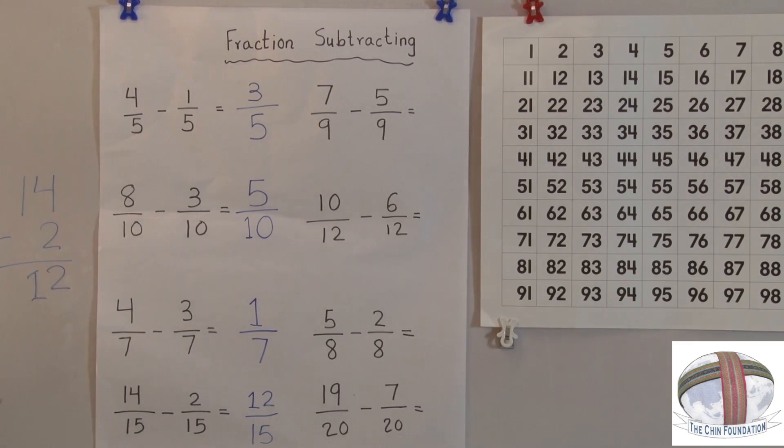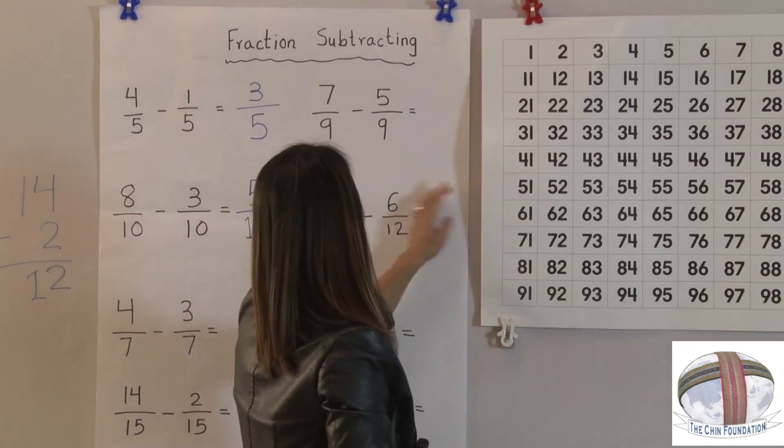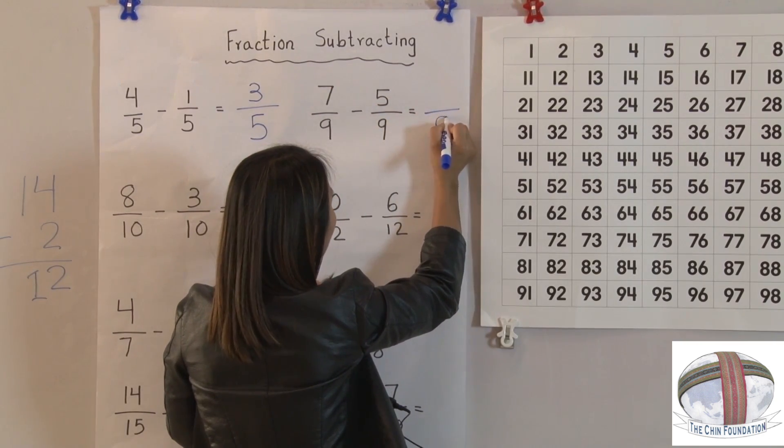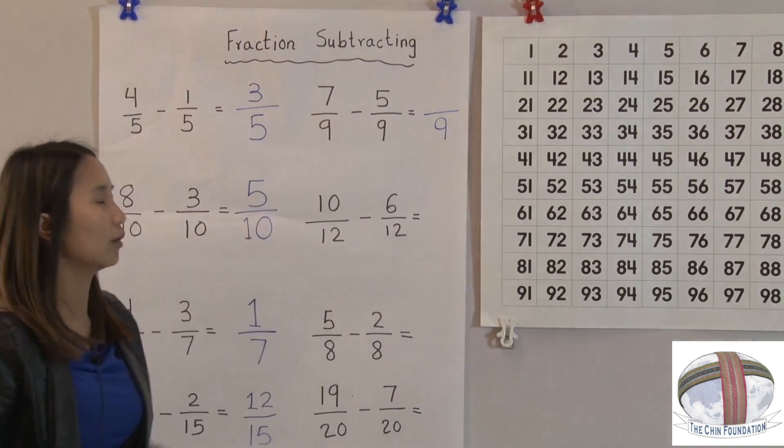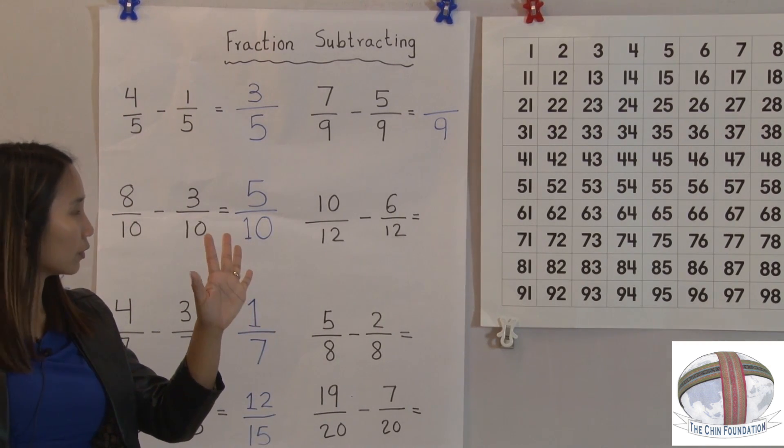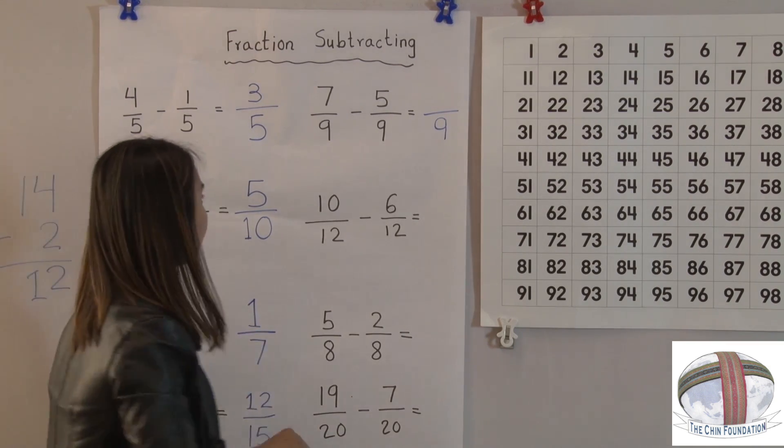All right. Let's practice more. Denominators are the same. So we just need to write 9. 7 take away 5. 7 take away 5. 1, 2, 3, 4, 5. That is 2 left.